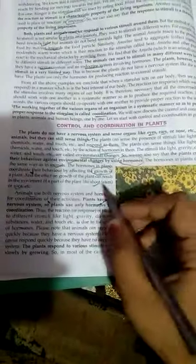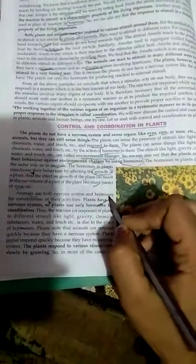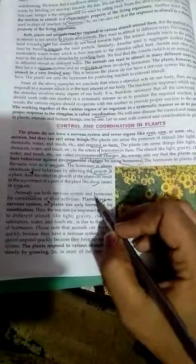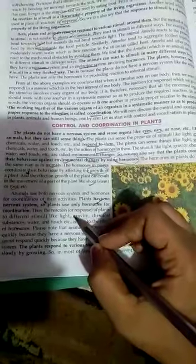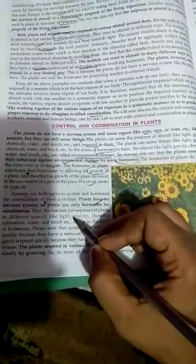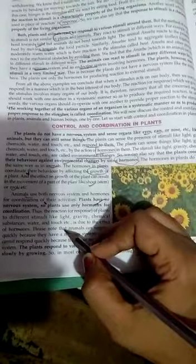Animals use both the nervous system and hormones. As you know, plants have no nervous system. They use only hormones, and the reaction of plants is different due to the effect of hormones.